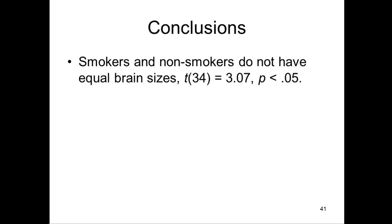So conclusions. Smokers and non-smokers do not have equal brain sizes, at least with respect to the frontal lobes, that section that Brody et al. were looking at. And this is how you'd write it with a very simple statement: t, degrees of freedom 34, equals 3.07. That's my calculated t, not my critical t. And p less than 0.05.